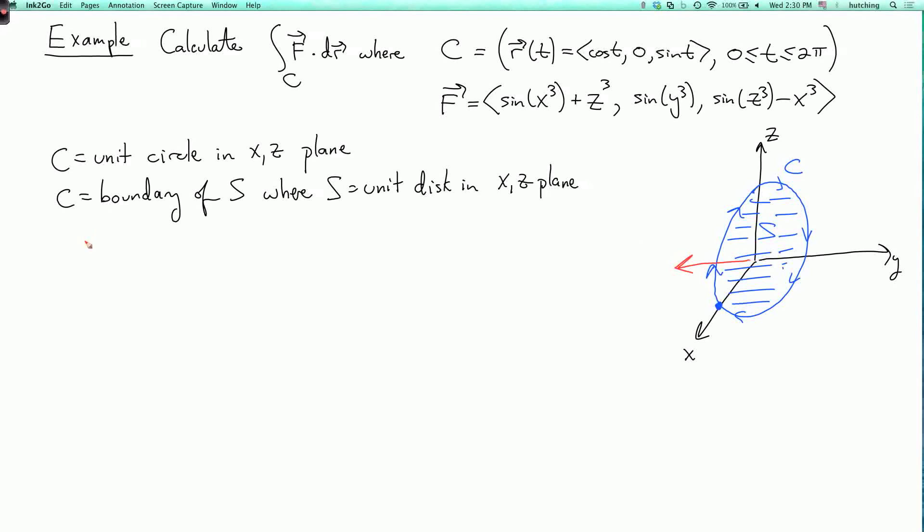So the unit normal that determines the orientation of s is (0, -1, 0). And with this choice, we get that c is positively oriented.